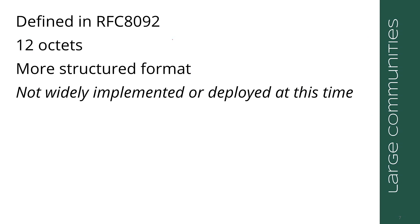A more recently designed community type is the large community, described in RFC 8092 — a fairly recent RFC. The large community has 12 octets and a much more structured format. Large communities are not widely implemented or deployed at this time, but you can read RFC 8092 — it's a fairly simple RFC — to understand the large community format.